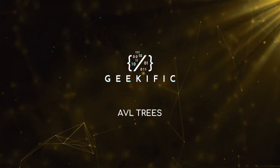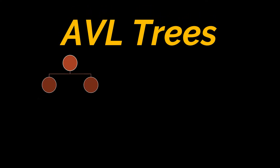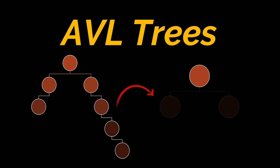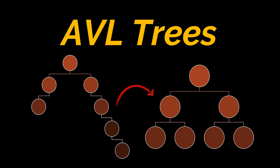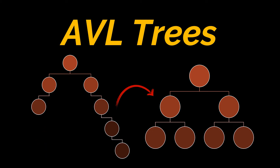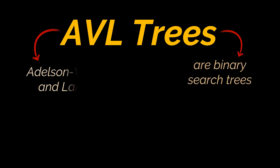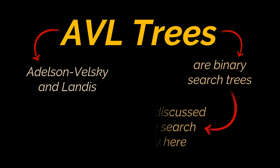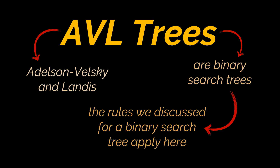Welcome to the channel. In the previous video of this tree series we discussed and implemented binary search trees, which provide a fast and easy way to store and retrieve data. However, we pinpointed one drawback: performance drastically degrades if the tree is not balanced. To tackle this problem, AVL trees came into existence. AVL trees are basically binary search trees — AVL stands for Adelson-Velski and Landis, its inventors' names.